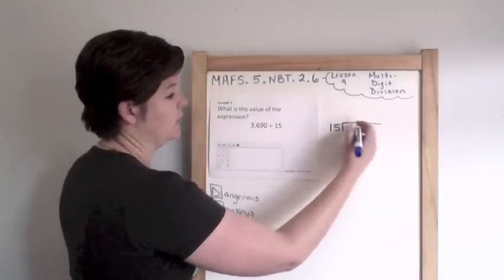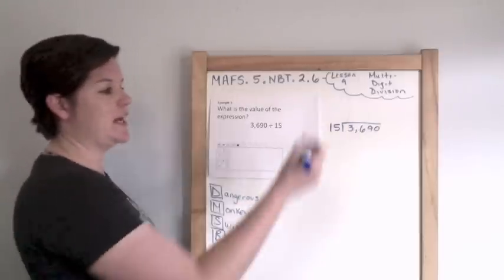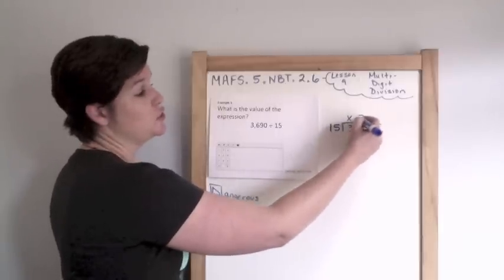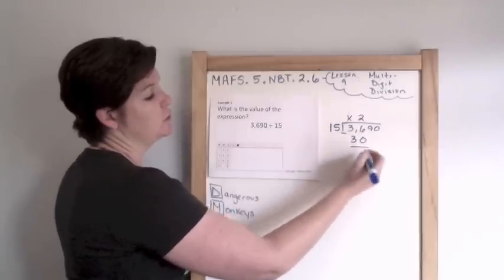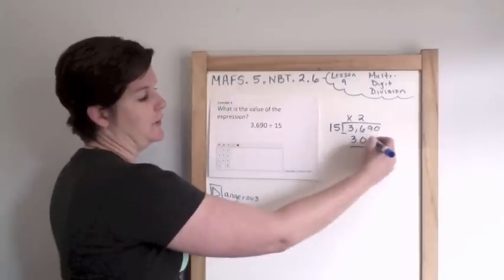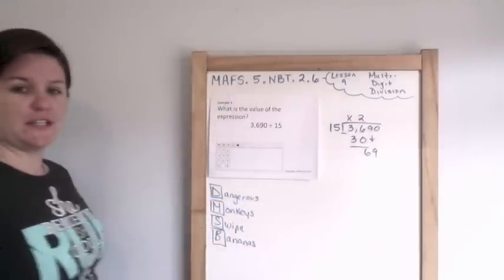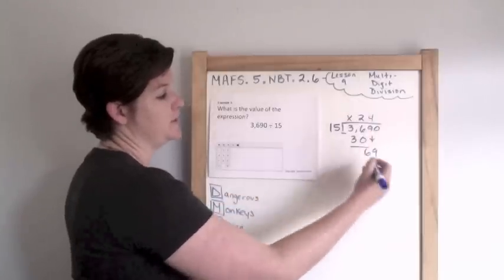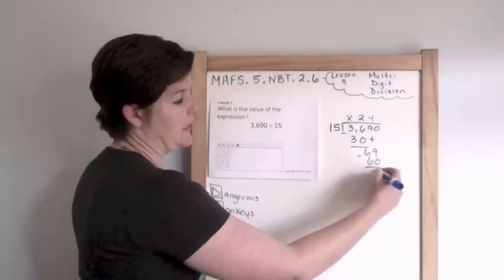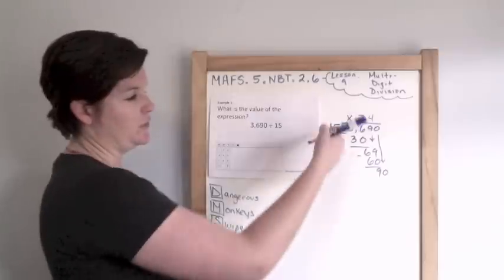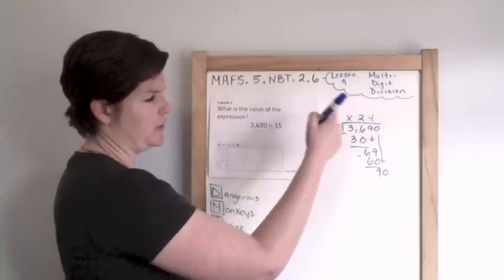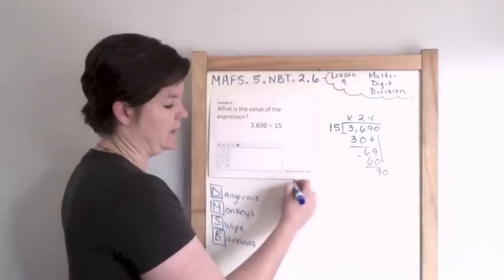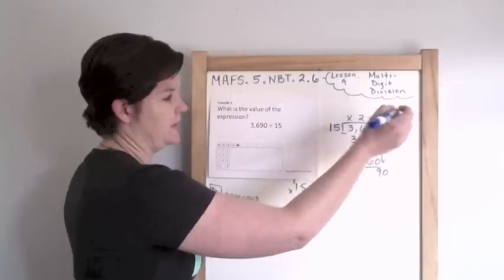So 15 going into 3,690. How many times does 15 go into 3? You can't do that, so I'm gonna put an X. 15 does go into 36 twice. Two times 15 is 30. Subtract and we have 6. For our banana we bring down the 9. 15 goes into 69, well it goes into 30 twice so it'll go into 60 four times. Four times 15 is 60. Subtract, we get 9, and bring down the zero. So it goes into 30 twice and 60 four times, then it should be 15 times 6 equals 90.